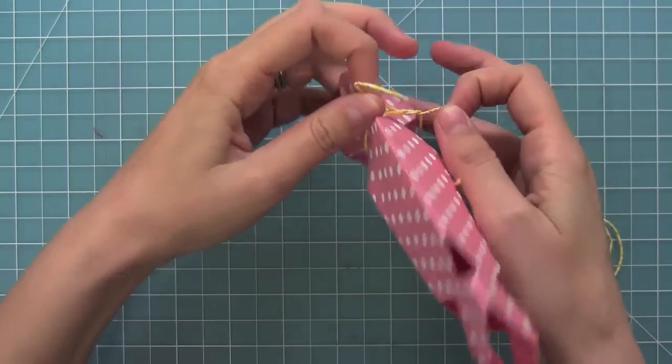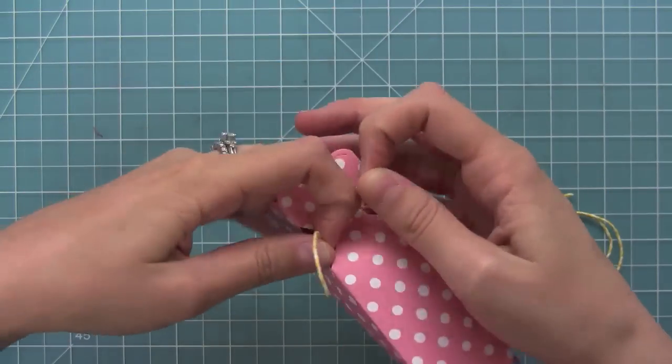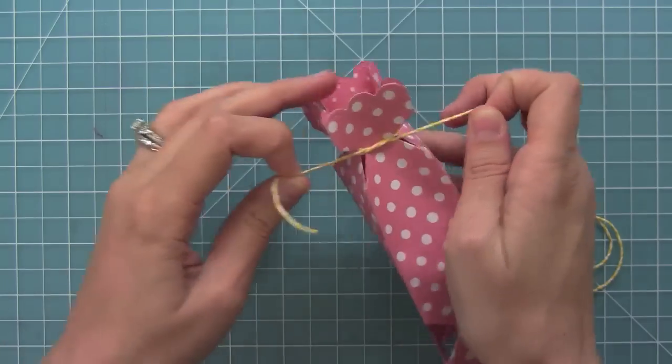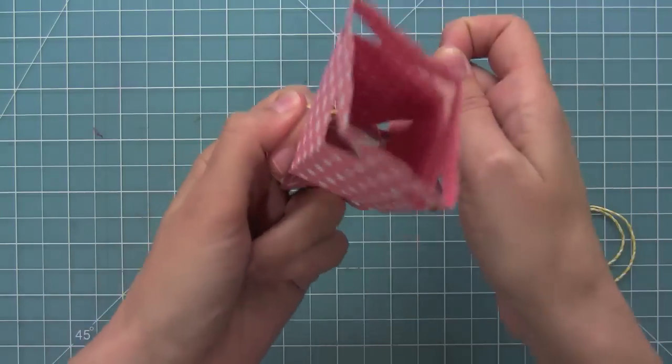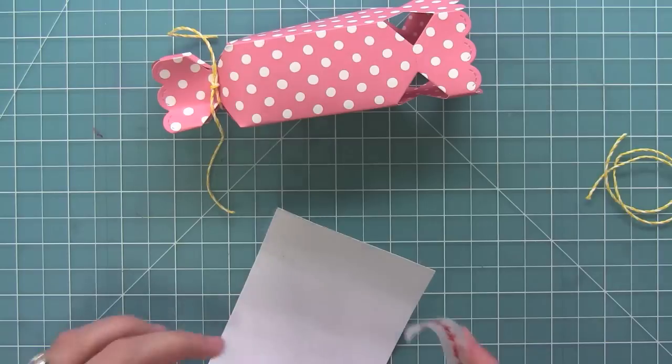Now I'm assembling another box and I wanted to show you what happens sometimes. Sometimes the box caves in on itself a little bit. All you need to do is stick your finger in and just pop it right back out, and it'll look perfect.